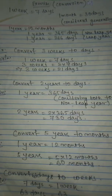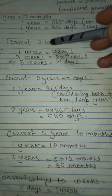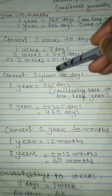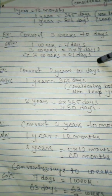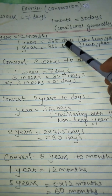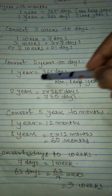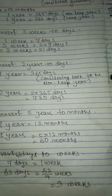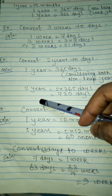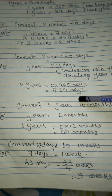Let us look at a few conversions. First, converting 3 weeks to days: since 1 week equals 7 days, 3 weeks equals 3 multiplied by 7, which is 21 days. Next, converting 2 years to days: considering both as non-leap years, 1 year equals 365 days, so 2 years equals 2 multiplied by 365, which is 730 days.